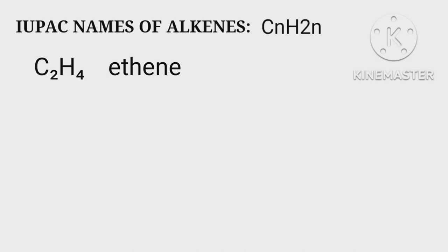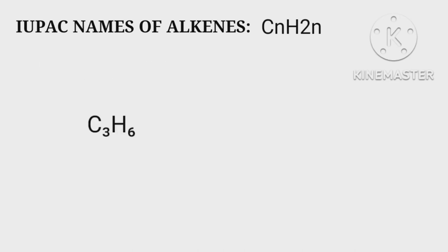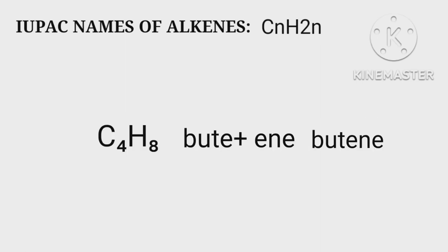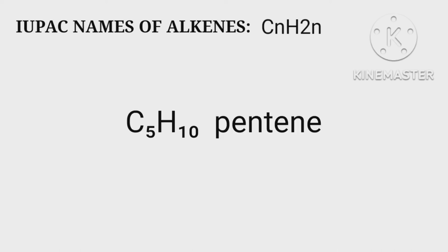The name is eth + ene = ethene. C3H6 is prop + ene = propene. C4H8 is but + ene = butene. Similarly, C5H10 is pentene, and so on.